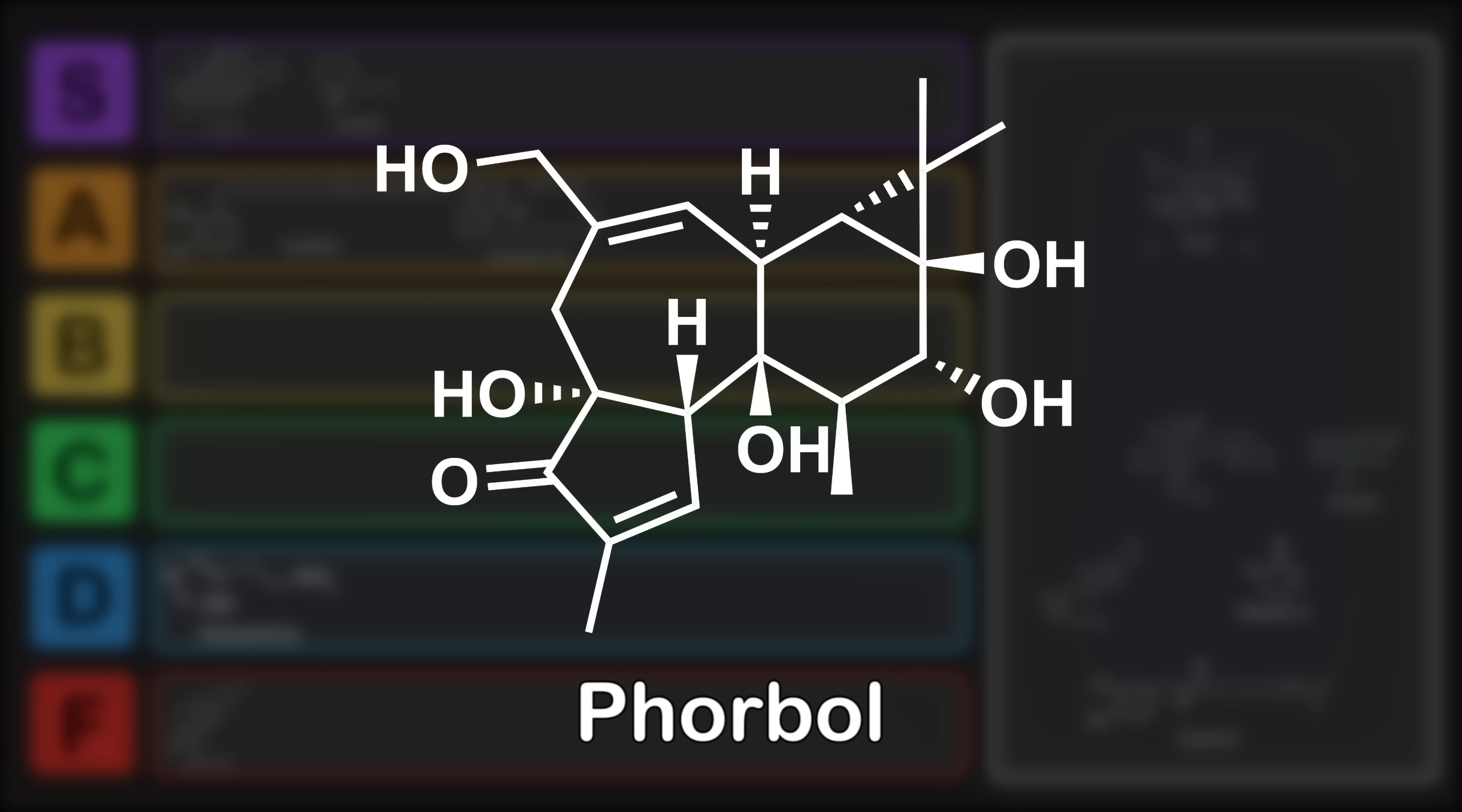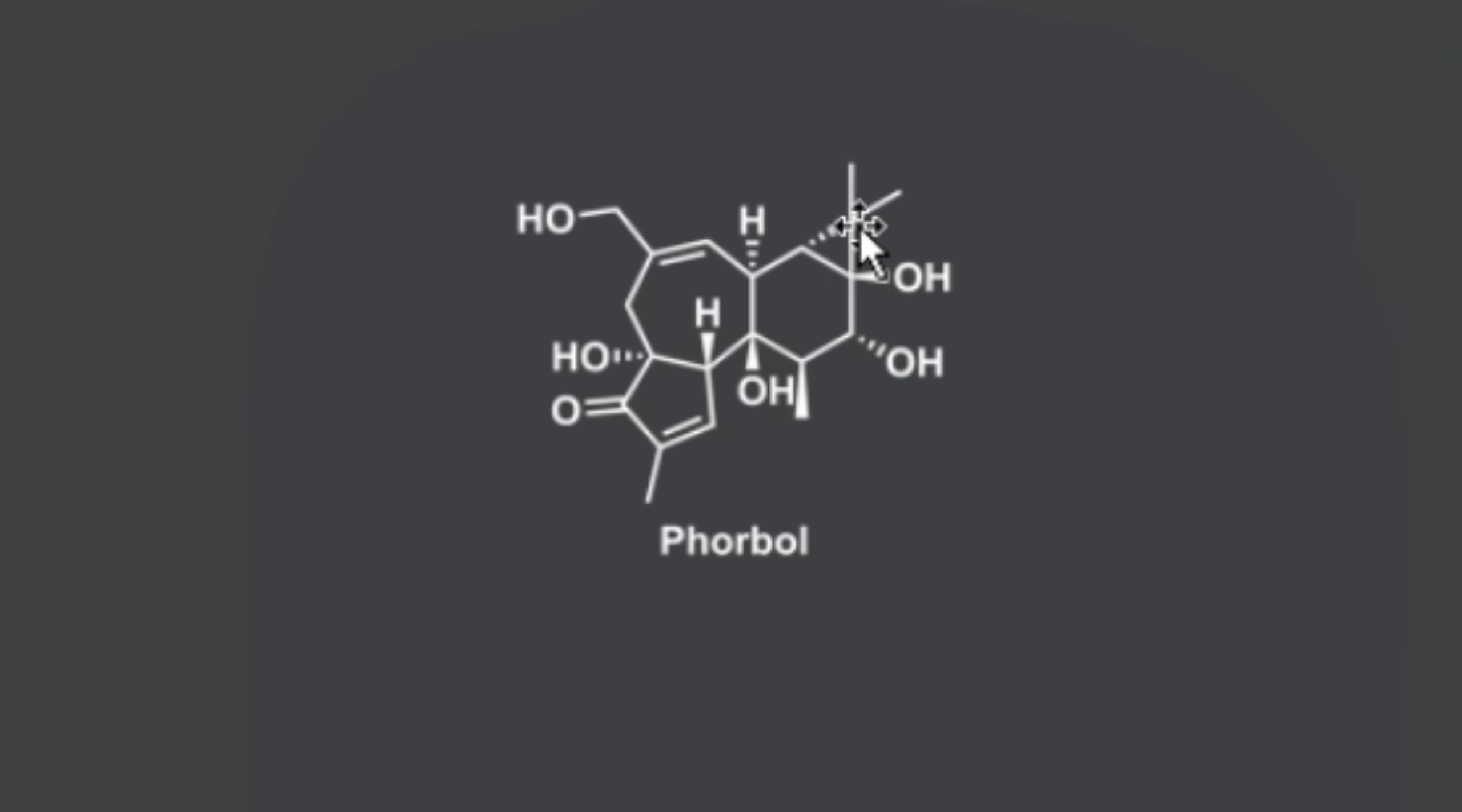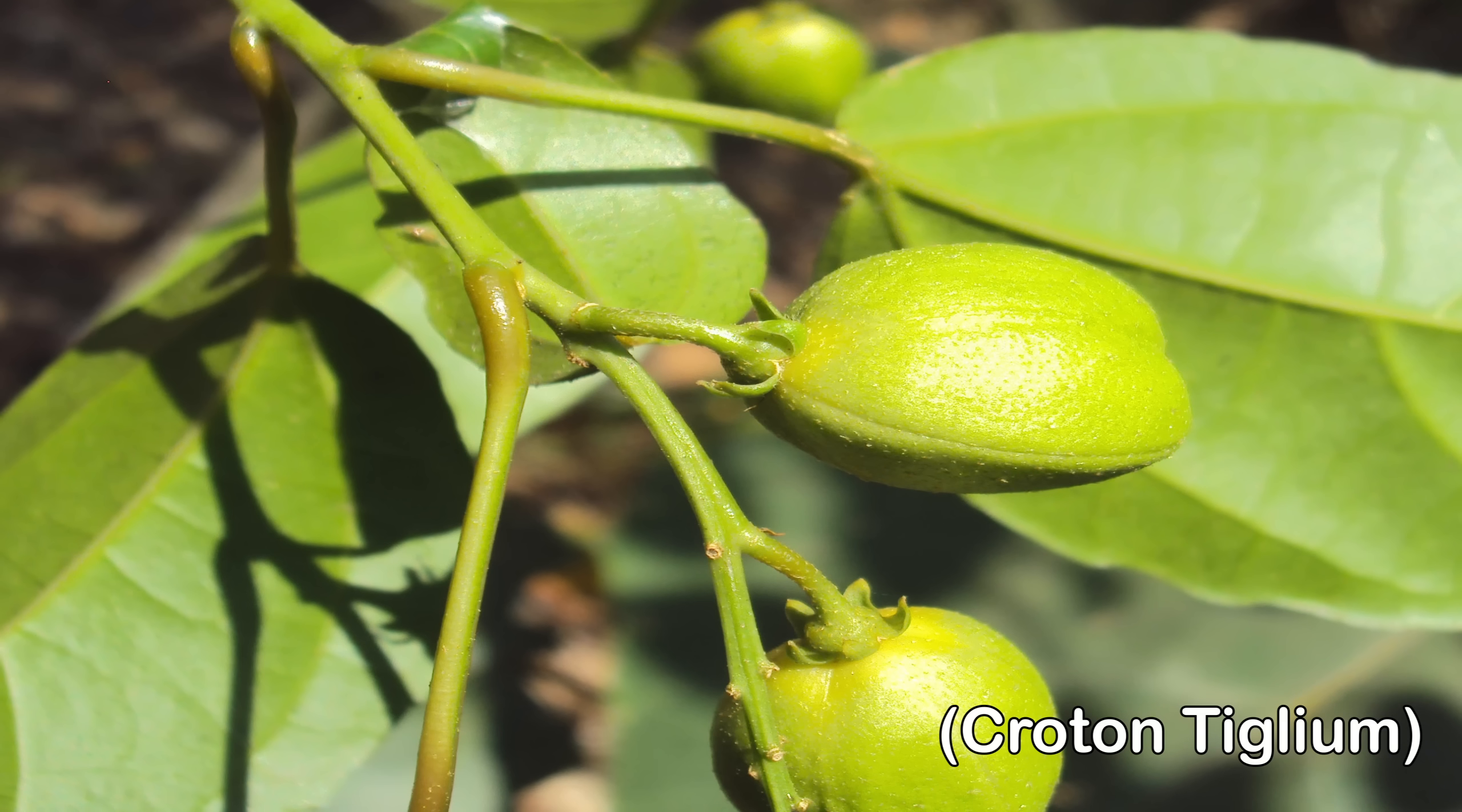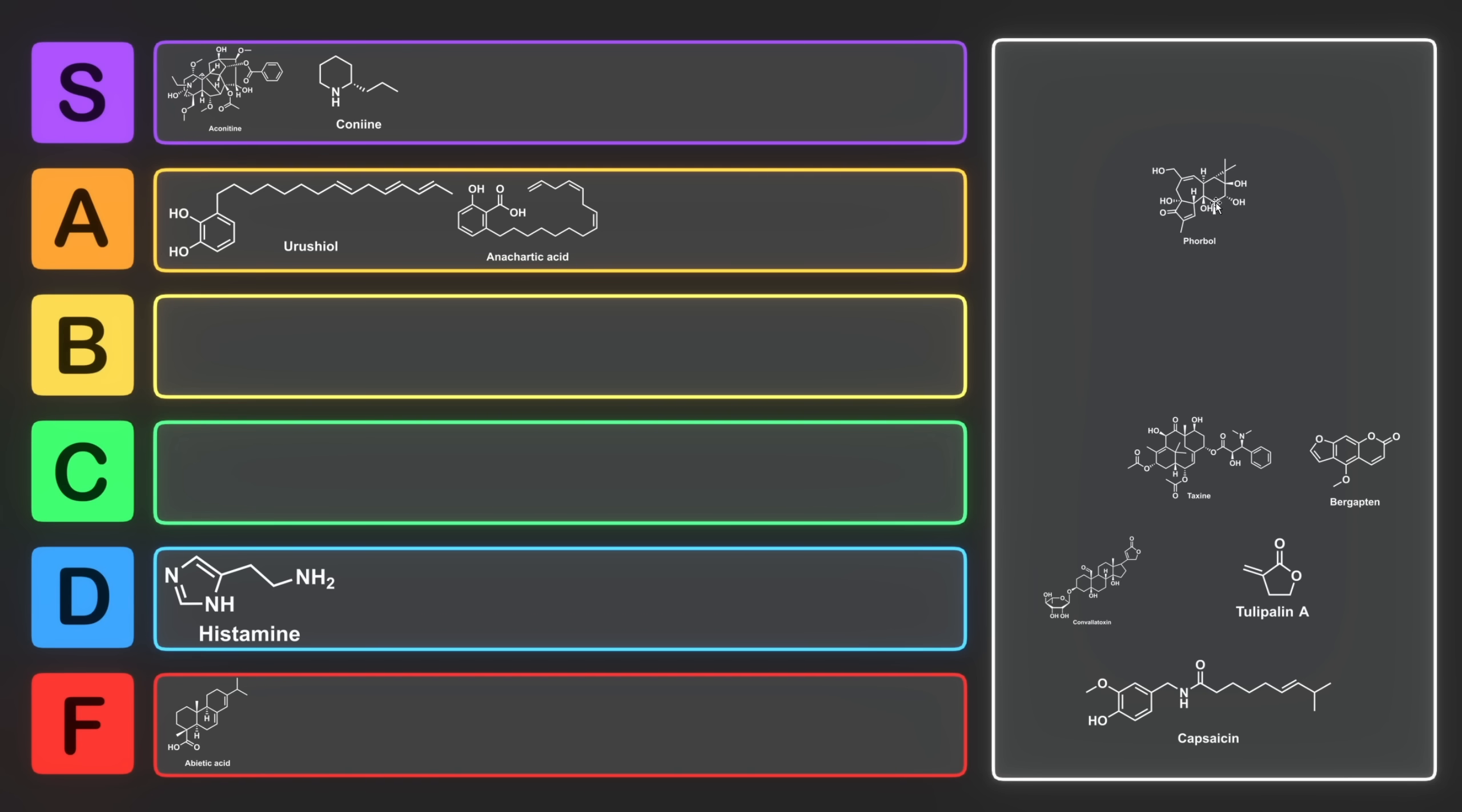This funky boy here is phorbol. Phorbol is a tetracyclic system, as there's a 7-membered, a 6-membered, a 3-membered, and a 5-membered ring. It has an alpha-beta unsaturated ketone, and it's also a pentaalcohol, as there's 5 alcohol groups. This one's an allylic alcohol. Phorbol is primarily found in the seeds of Croton tiglium, also known as purging croton. Phorbol as a compound has a number of effects on the human body, some of which can be considered medicinal. It's been used as a purgative or laxative since antiquity, hence the name purging croton.